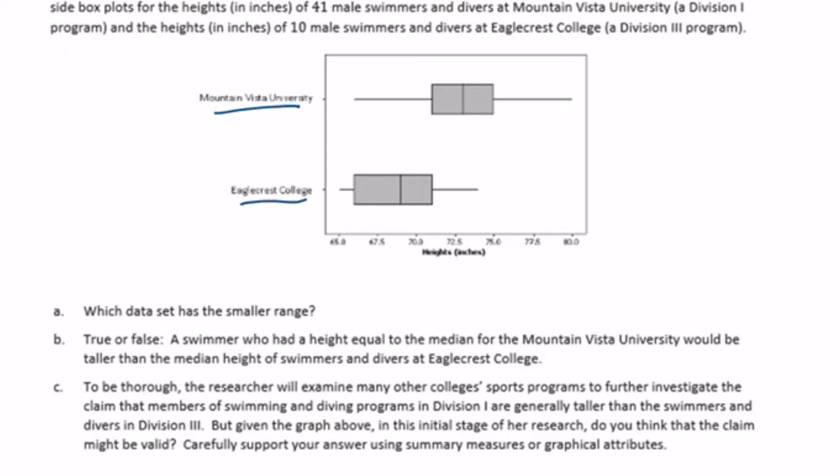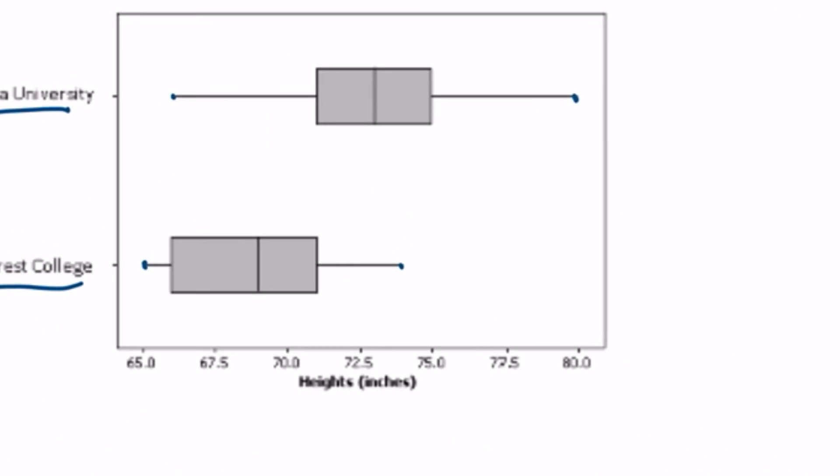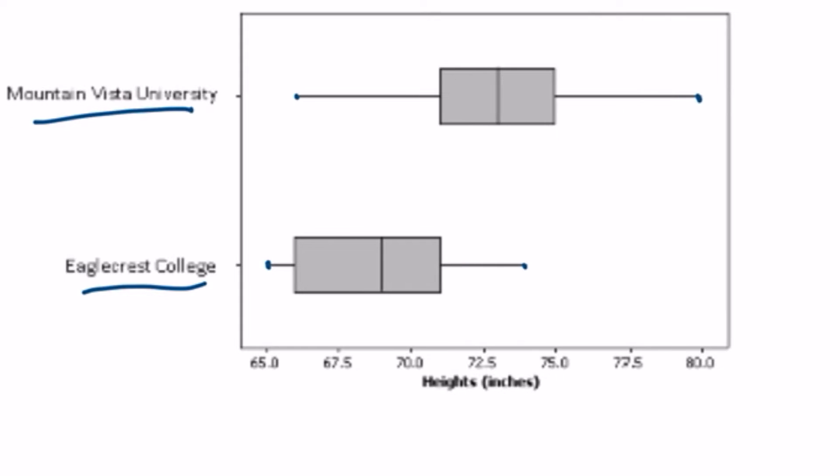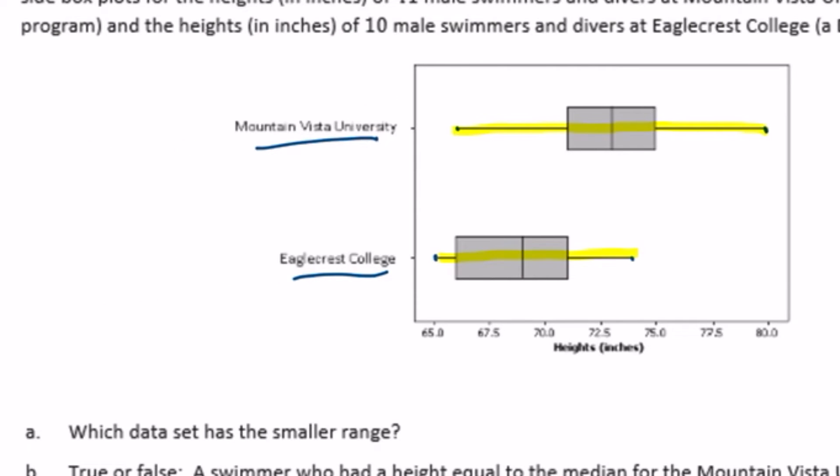Which data set has the smaller range? So the range is the distance from the minimum to the maximum. From what I'm looking at here, Mountain Vista University has a larger range. I can see that without even figuring out the range, but they asked who has a smaller range. So Eagle Crest College has the smaller range.